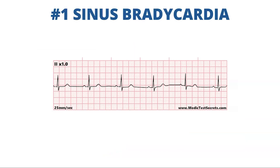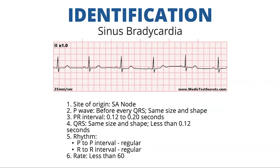Let's go through sinus bradycardia first. Sinus bradycardia originates in the SA node. There's a P wave before every QRS, same size and shape. There's a normal PR interval of 0.12 to 0.20 seconds. The QRS is going to be the same size and shape — narrow, less than 0.12 seconds. It's going to have a regular R to R interval and a regular P to P interval. The rate is less than 60.